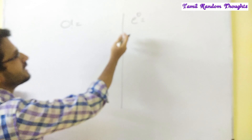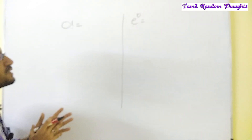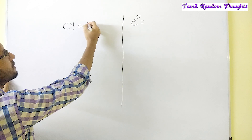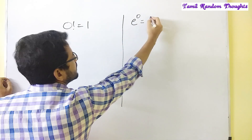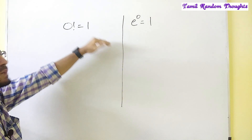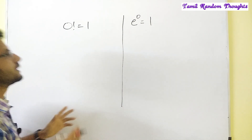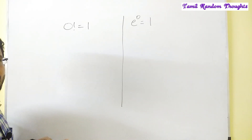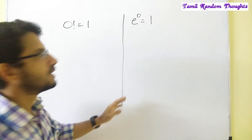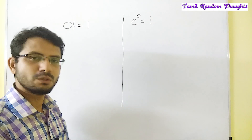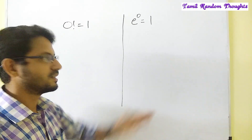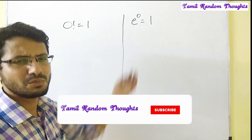Now, if we need to find the value of 0 factorial, you can find that the value of 0 factorial is 1. So, if you study engineering mathematics or school mathematics, how do you know how to do this? If your teachers tell you, this is E power 0, and you can do this — this is a very simple proof.